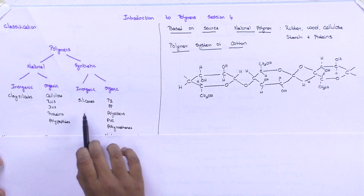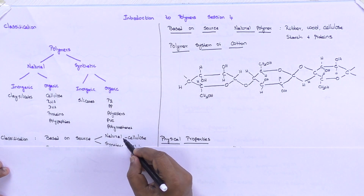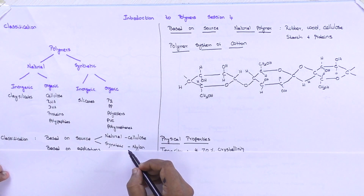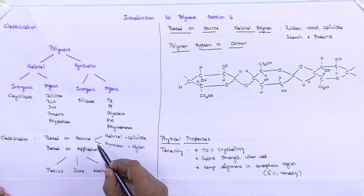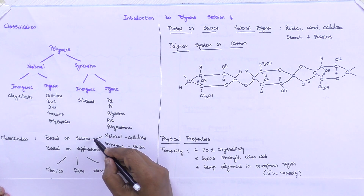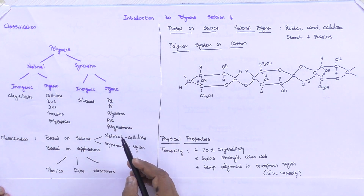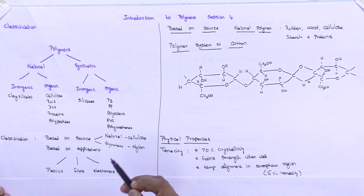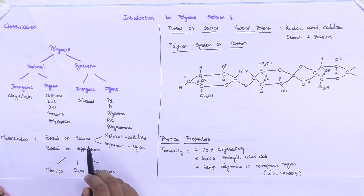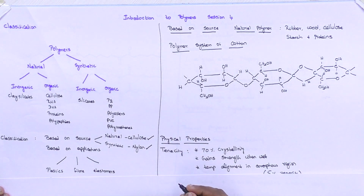This classification is done based on source — you can classify polymers as natural and synthetic. Also, based on applications, you can classify them as plastics, fibers, and elastomers. So polymers can be classified based on source and based on application. Now, being a textile technologist, based on source we are going to see two examples: cellulose and nylon.